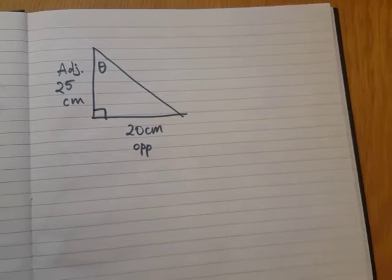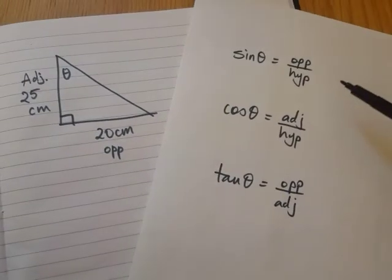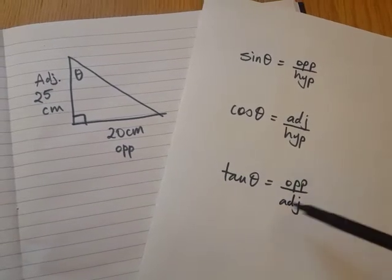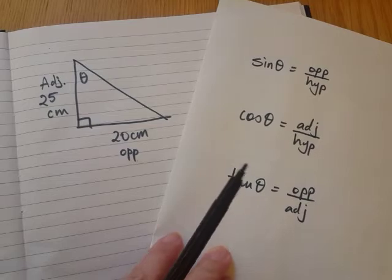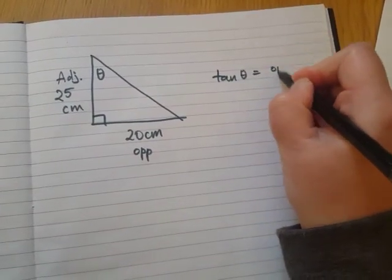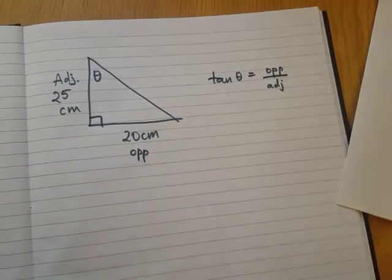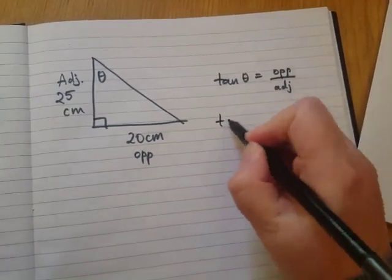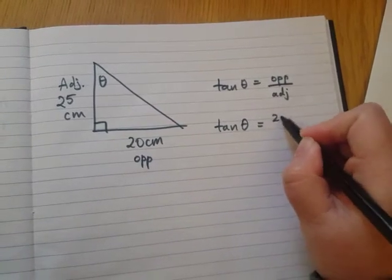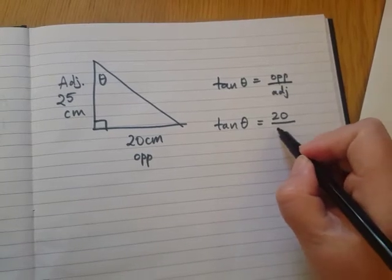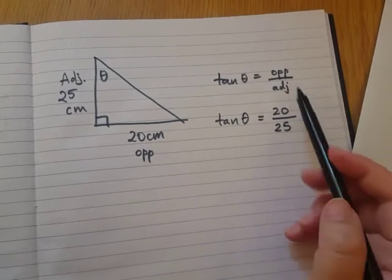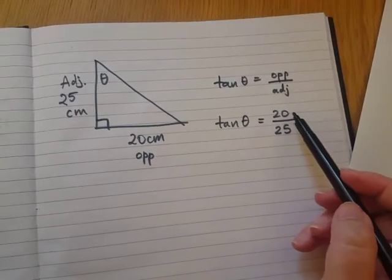Okay. So looking at our three formulas, it's going to be tan. Okay. Tan stands for tangent. So we're going to use the tan function today. So tan theta equals opposite divided by adjacent. Let's put the numbers in. Tan angle equals 20 divided by 25. Make sure we got them the right way around. Opposite is the numerator. Okay.